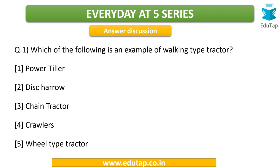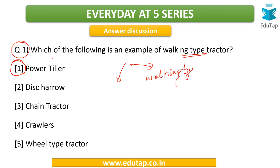Let us start with a discussion of the questions we were putting forth yesterday. The first one is: which of the following is an example of a walking type tractor? The answer is power tiller. Based on the type of construction, tractors can be divided into two types. One is the conventional type where the driver takes a seat and drives the tractor. The second is called the walking type tractor, where the operator walks behind and operates it from behind — there is no arrangement for the driver to sit.